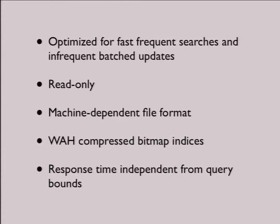There are some compromises you have to make if you want such speed. For example, it's read-only. You have to recreate the database file every time you change the data. We have a master database of records, and we recreate this read-only database every night or whenever there's an update. It's in a machine-dependent file format — for extra speed, we just map the file to memory. The key term for anyone interested in databases is word-aligned hybrid compressed bitmap indices. It sounds crazy, but it's a well-known technique for fast indexing and fast searches.